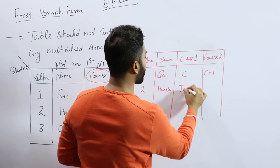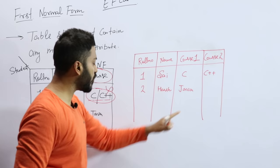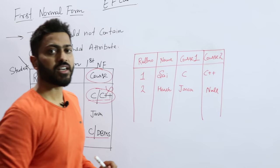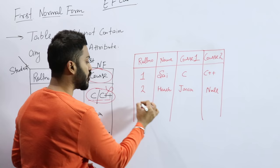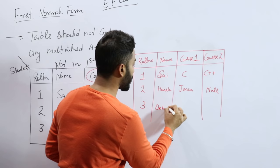Now the important part is what will be course two for Harsh? Course two - he is not registered in any, so that value will be null. Null means empty, it is not zero. Actually, null means not available, the value is not existing there, so you have to leave it empty. Three, Onkar, C and DBMS.